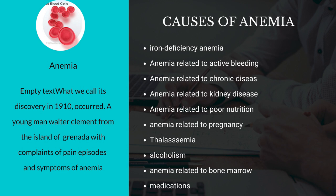Number 2, anemia from active bleeding. A suitable example for this type of anemia is the menstrual cycle, in which loss of blood is significant, and this can also lead to anemia. Number 3, anemia related to chronic diseases. Chronic diseases like cancer, diabetes mellitus, kidney disorders, etc. can also lead to anemia.